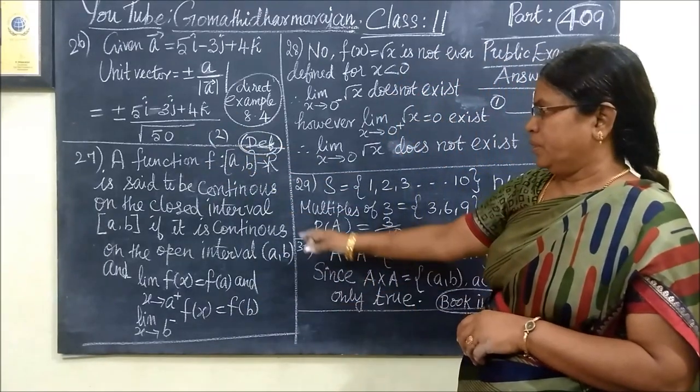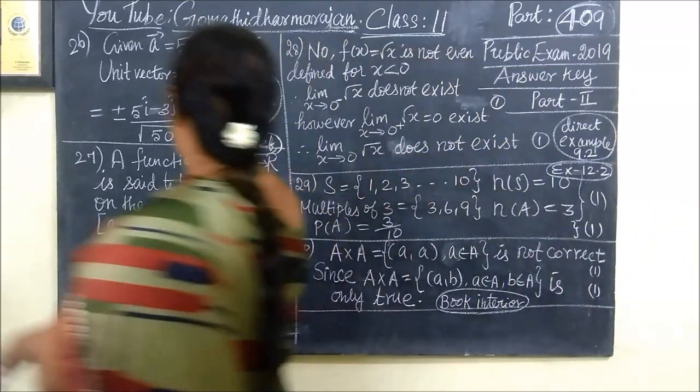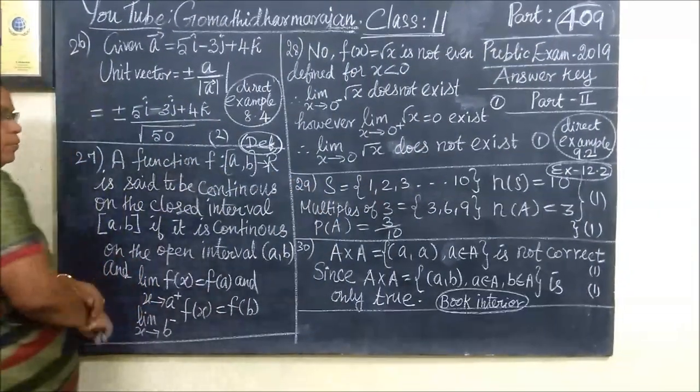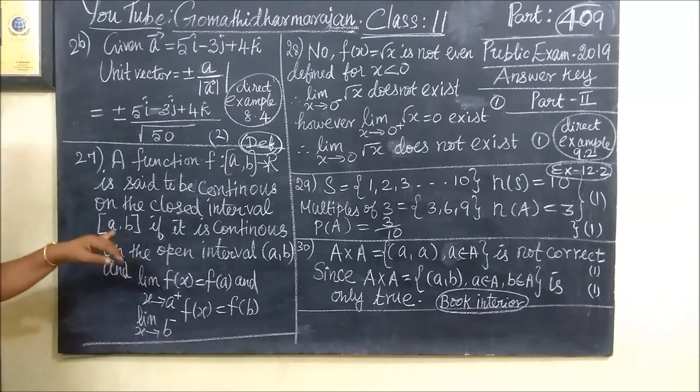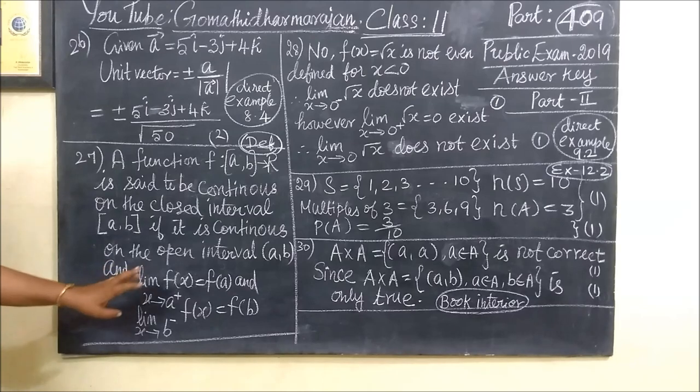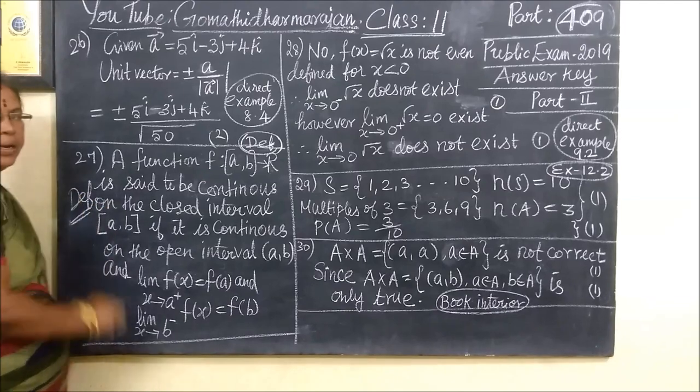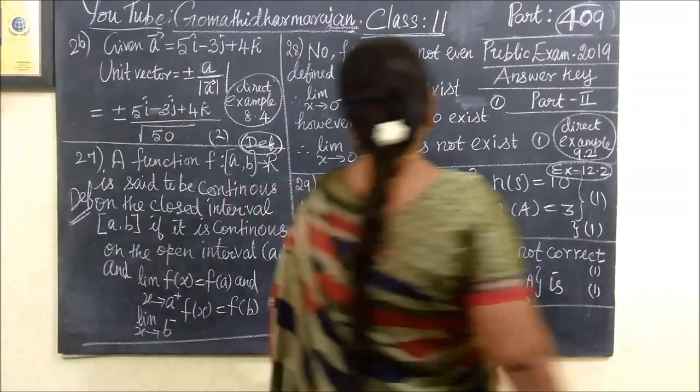This is the definition. A function from the closed interval a to b is said to be continuous on the closed interval if it is continuous on the open interval. This comes under the heading definition.